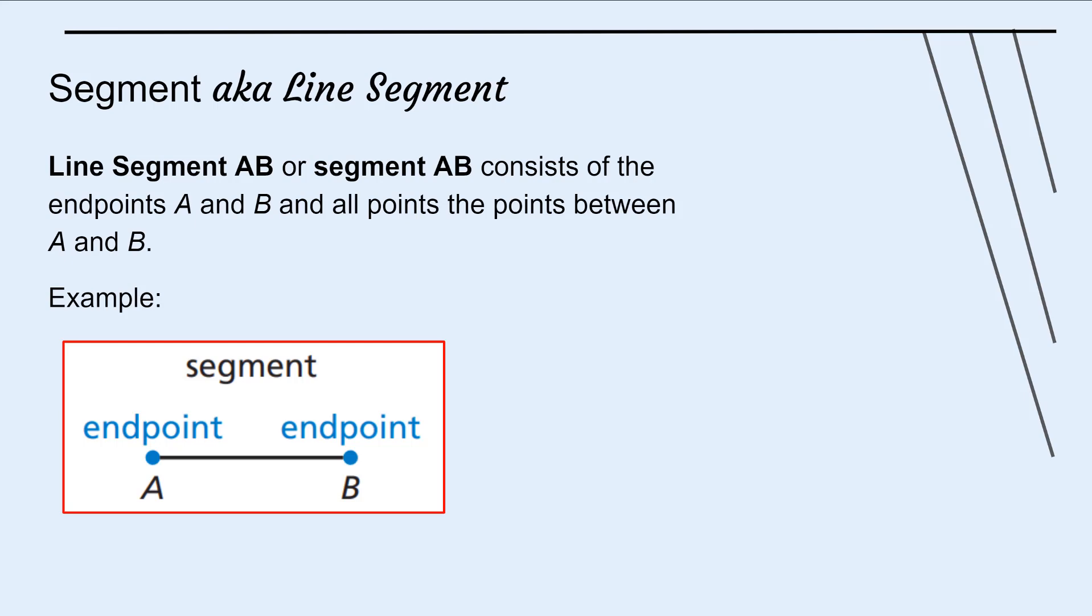What's the difference between a line and a segment? A line extends in both directions without end. But a segment has clear endpoints. How can we name this segment?